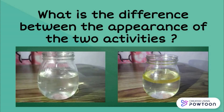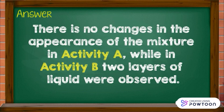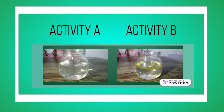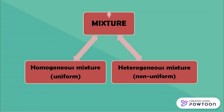Explain: what is the difference between the appearance of the two activities? There is no change in the appearance of the mixture in activity A, while in activity B, two layers of liquid were observed. In activity A, the sugar completely dissolved in water — it is not visible and seemed to have disappeared. You cannot recognize if sugar was added to the water because it does not change its appearance. In activity B, the layers form separating oil from water. It means that oil is immiscible, or unmixable, to water.